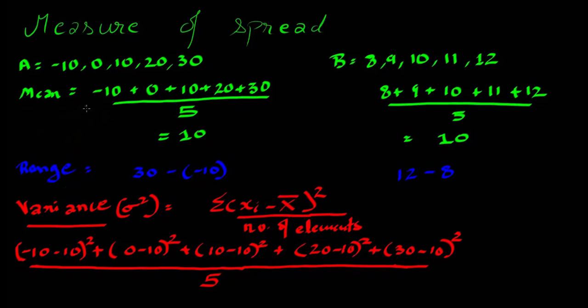Here comes the measure of dispersion, or measure of spread, where first we will talk about range. Range is simply the difference between the greatest and the smallest element. Here the greatest element is 30 and smallest is -10, so the difference comes out to be 40. Similarly, for B, 12 minus 8 comes out to be 4.